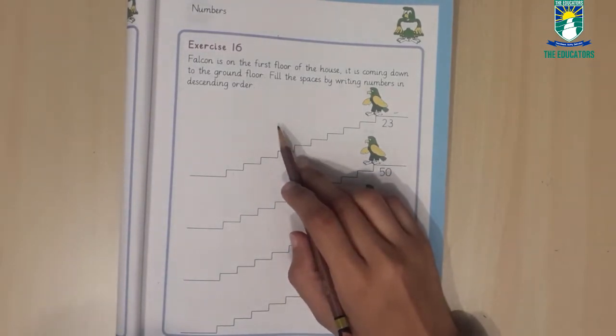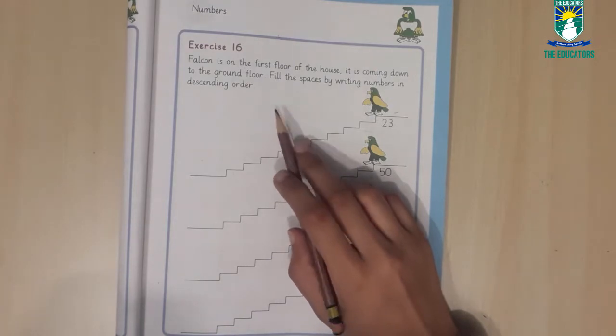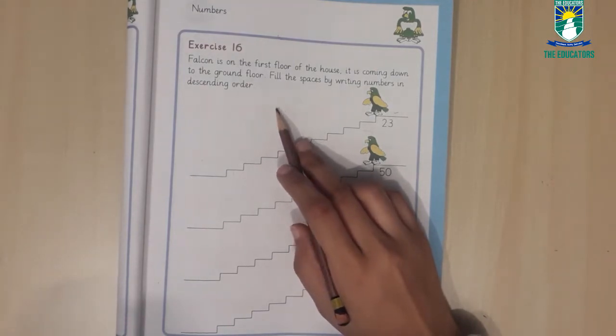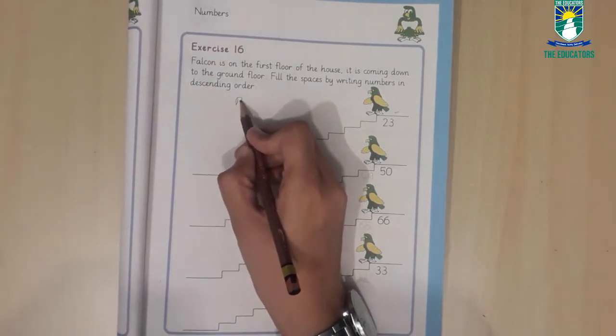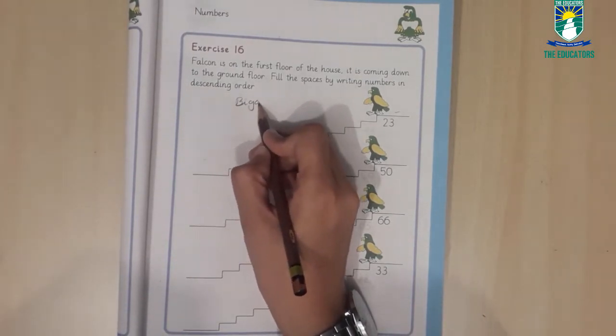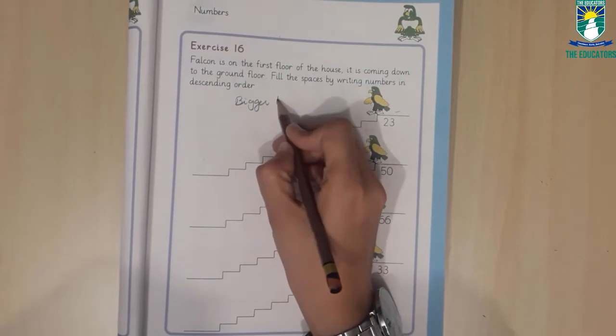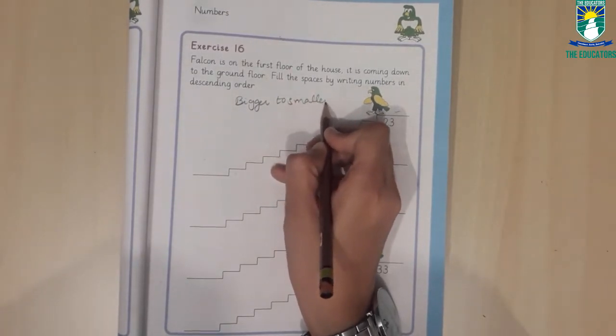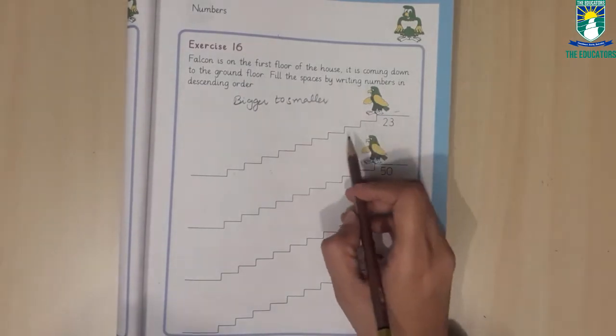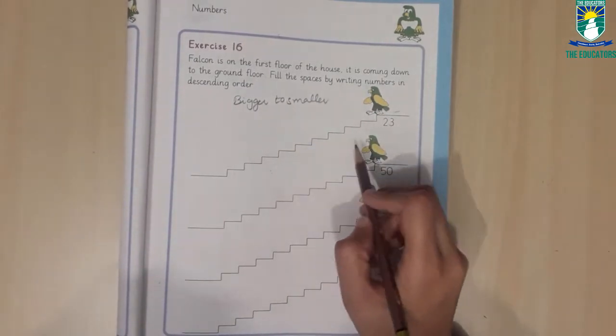Now we will write the number in descending order. Descent means go down. So we will write the number in bigger to smaller. We will start with bigger numbers and move with smaller numbers. Now we have to move downward and down to lower.